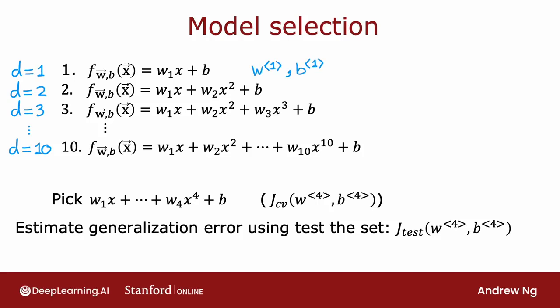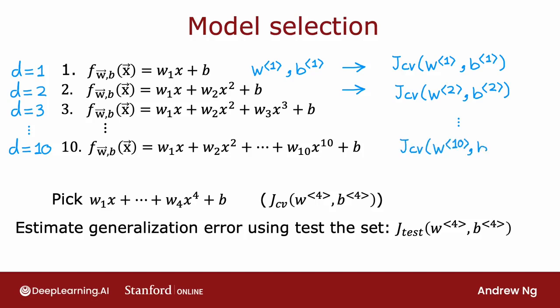Similarly, for the second model you get JCV of w2, b2, and so on all the way down to JCV of w10, b10. Then, in order to choose a model, you look at which model has the lowest cross-validation error.